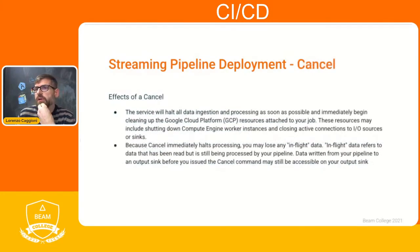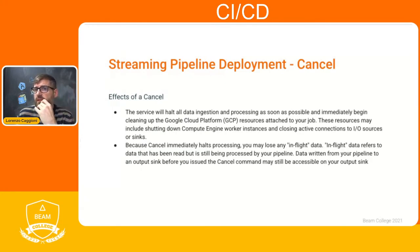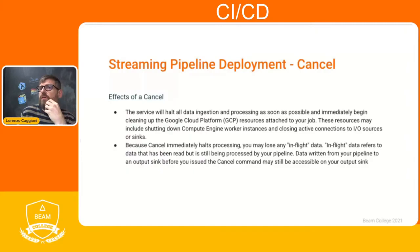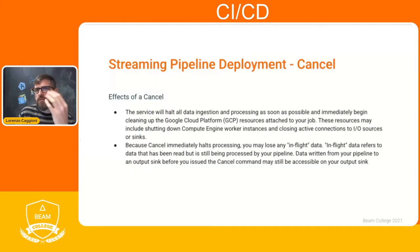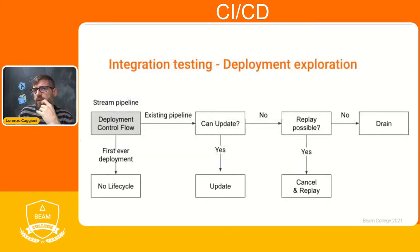The last option is Cancel. This will halt all data ingestion and processing as soon as possible. As mentioned, you may lose any in-flight data. Another drawback is that you incur some downtime between terminating your current pipeline and starting the new one. However, the advantage of this approach is that it's simpler than draining the existing pipeline before launching the new job. Take into account all the pros and cons of the different scenarios — if you want to recap all those options you can follow the decision diagram.